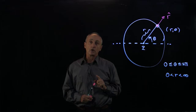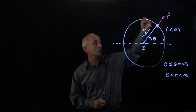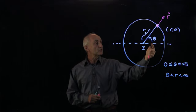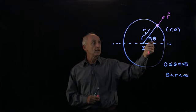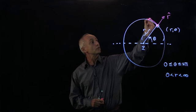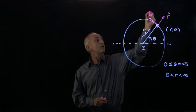What about the theta direction, tangential to the circle in this particular case? Because theta is increasing in this direction, we choose our tangential unit vector, which we're going to call theta hat.